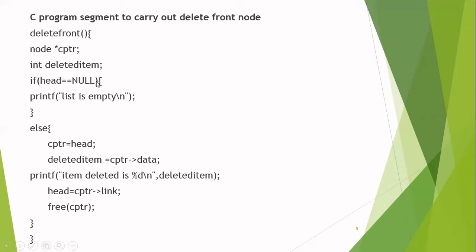How do you check whether the linked list is empty? If the linked list is empty, the header will have the value null. So just check the header value. If the head value is equal to null, it indicates the list is empty and you cannot perform deletion operation. Else, if the header is not null, then there are some nodes in the linked list and you can carry out the deletion operation.